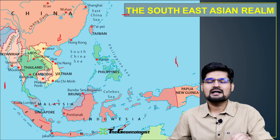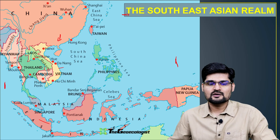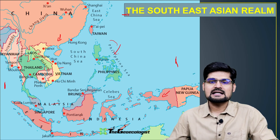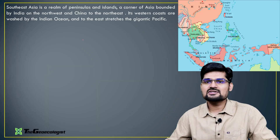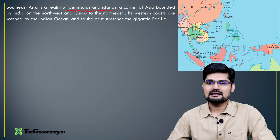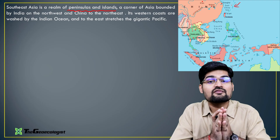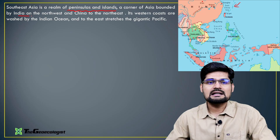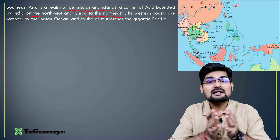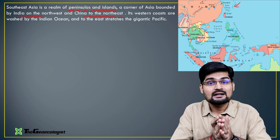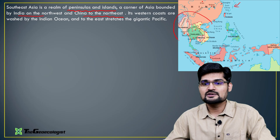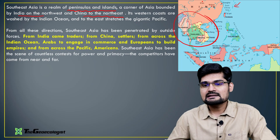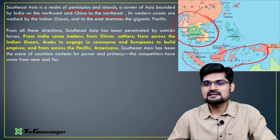Then you have the largest archipelago country, Indonesia, where you have Java, Sumatra, Borneo, Brunei, New Guinea, and Philippines — the island chains out here. The Southeast Asian region is a realm of peninsulas and islands, comprising the Pacific Ring of Fire, very important for geomorphology. It is a corner of Asia bounded by India on the northwest and China in the northeast, also referred to as the Indo-China region. The giant in this region is the Indonesia chain of islands — the archipelago country.